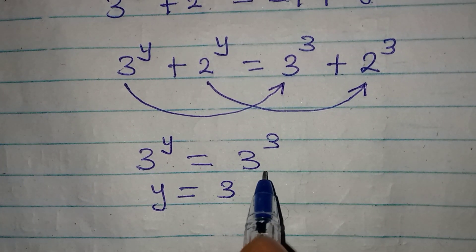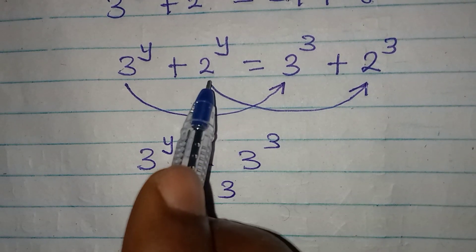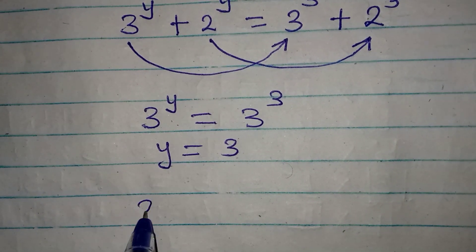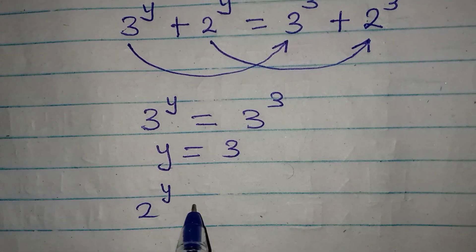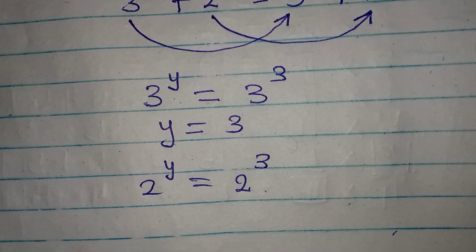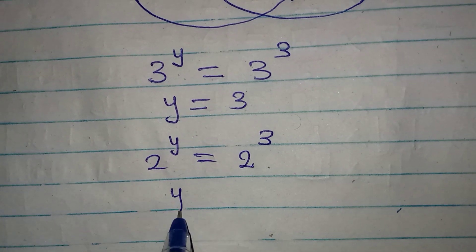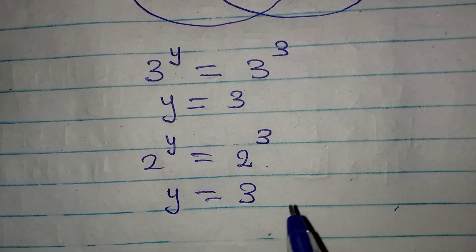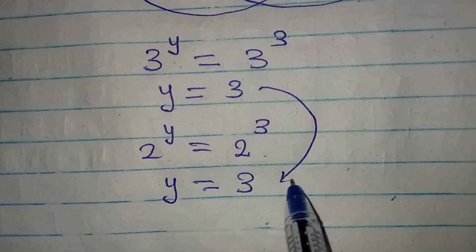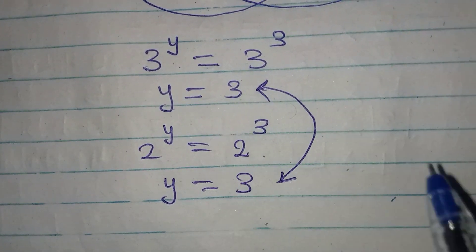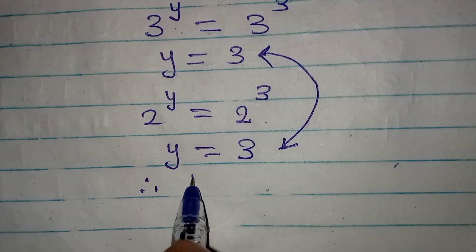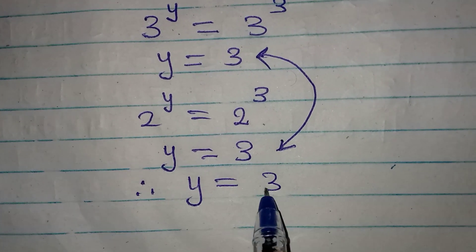Then moving to the other term: 2 to the power of y equals 2 to the power of 3. The bases are still the same, meaning y is still equal to 3. From both comparisons we can conclude that y is equal to 3.